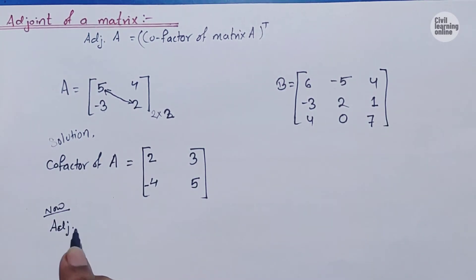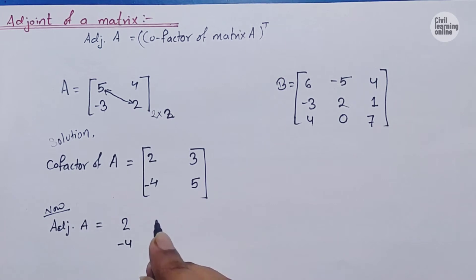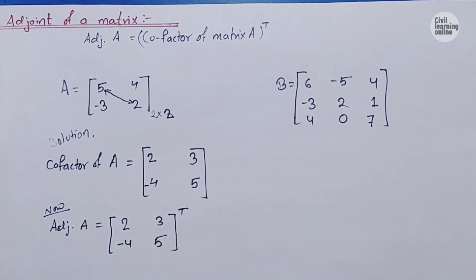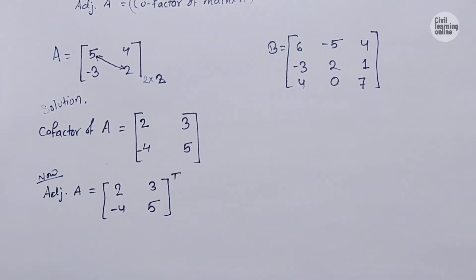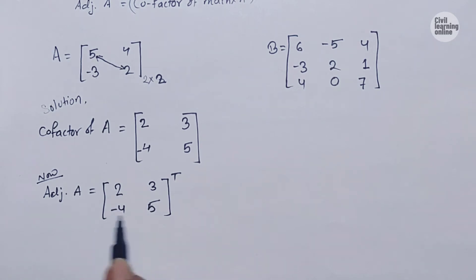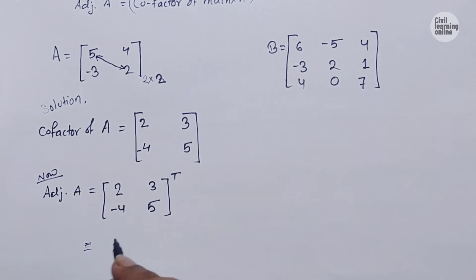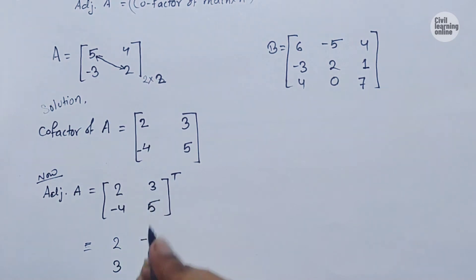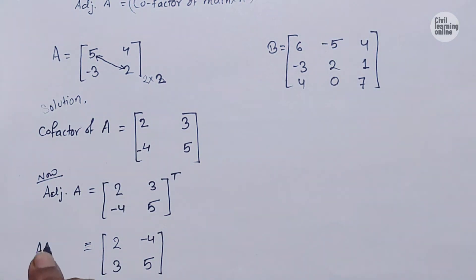The adjoint of matrix A equals the transpose of the cofactor, which is: cofactor = [2, -4; 3, 5]. To calculate the transpose, we change the first row to the first column and the second row to the second column. So the adjoint of matrix A is [2, 3; -4, 5]. This is the adjoint of matrix A, and it can be asked in an exam for two marks for a 2x2 matrix.